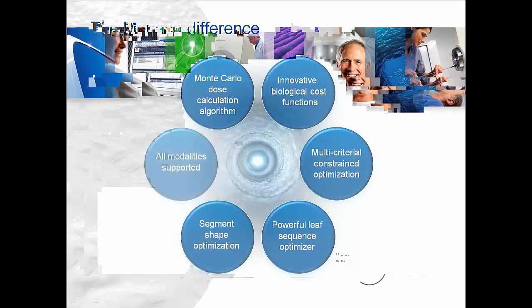There are a number of features that differentiate Monaco, and I want to talk about a few of them so that when I get into the program, you understand the terminology. Let's start with biological modeling. These biological cost functions allow us to model tissue-specific dose responses. When I talk about a serial cost function, it's just like a serial structure—we're worried about a high dose to a point. When I talk about a parallel cost function, I'm worried about dose to a volume.